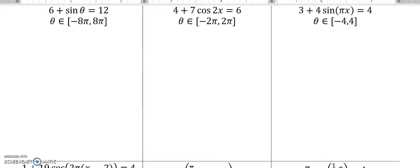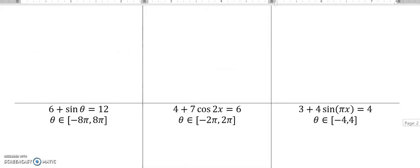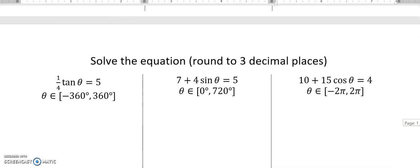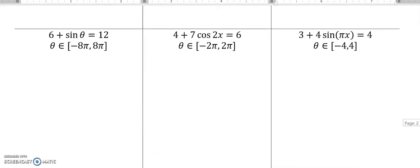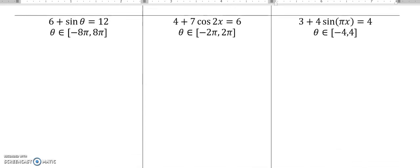This is a pre-calc topic practice assessment. I'm doing the second row of solve equations on the back. So 6 plus sine theta equals 12, theta is running from negative 8π to 8π, so it's in radians, and it looks like there's no multiplier, so the period is 2π.